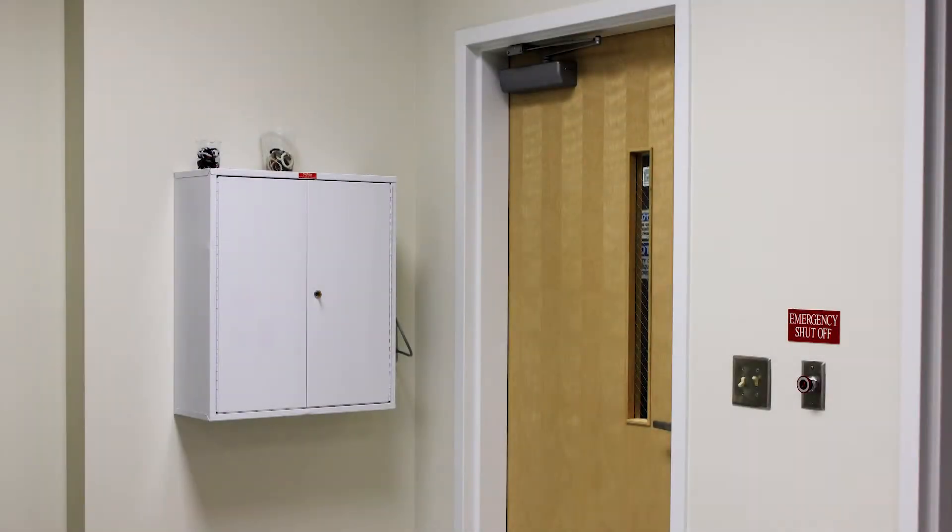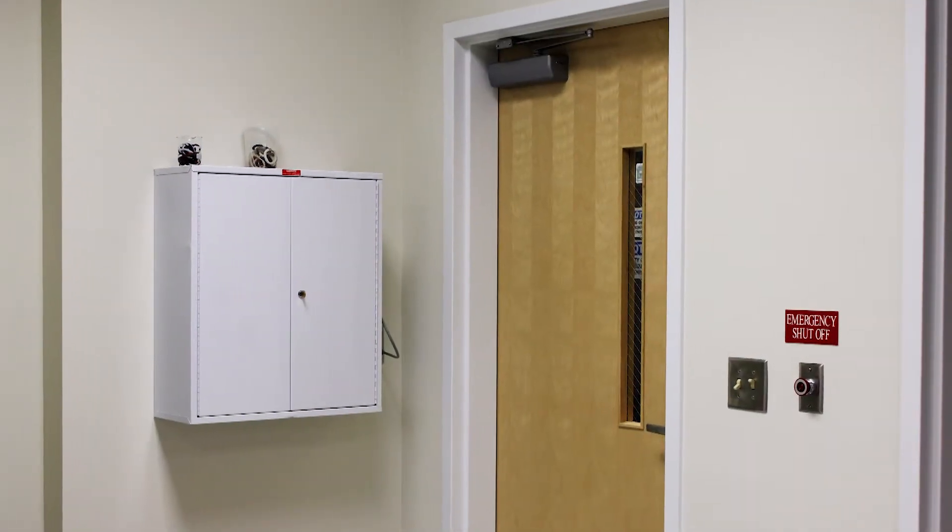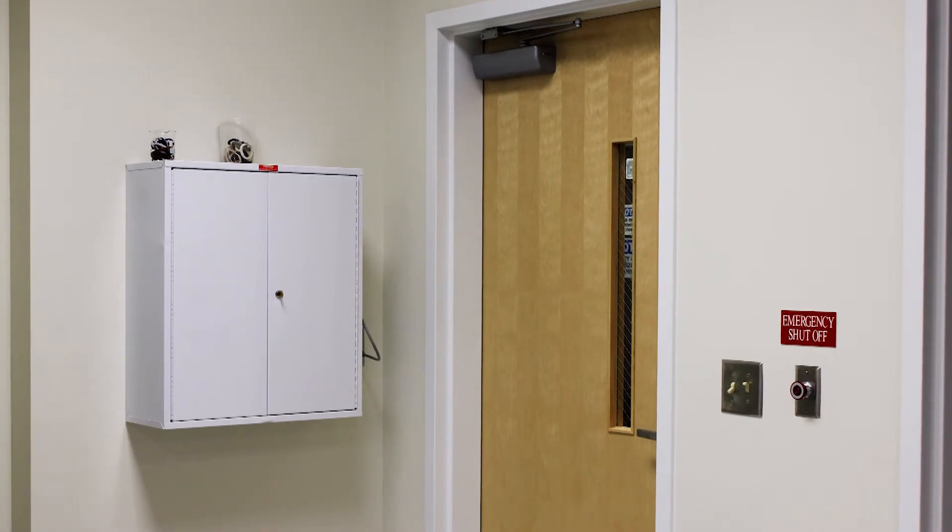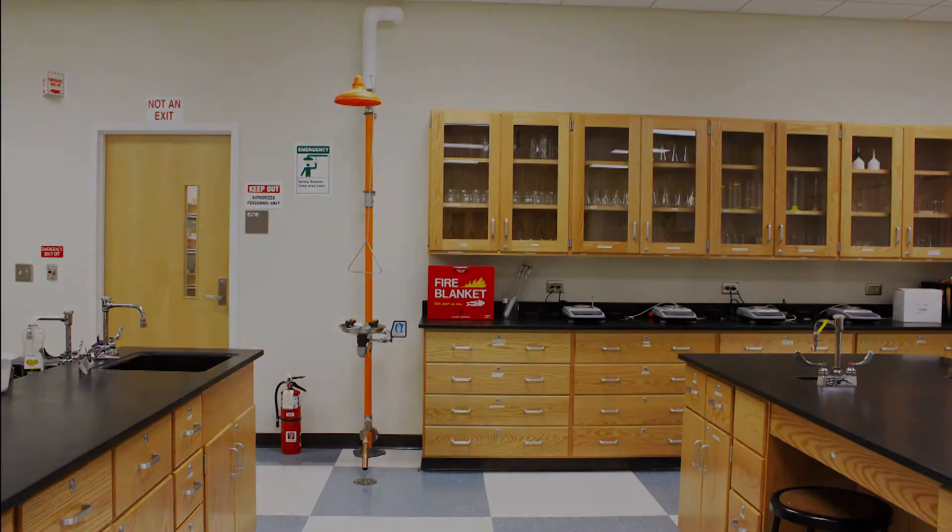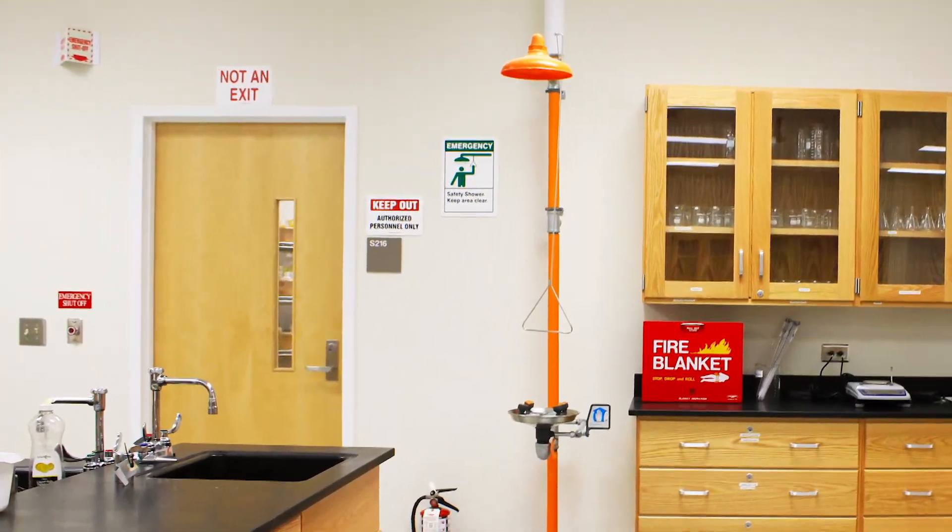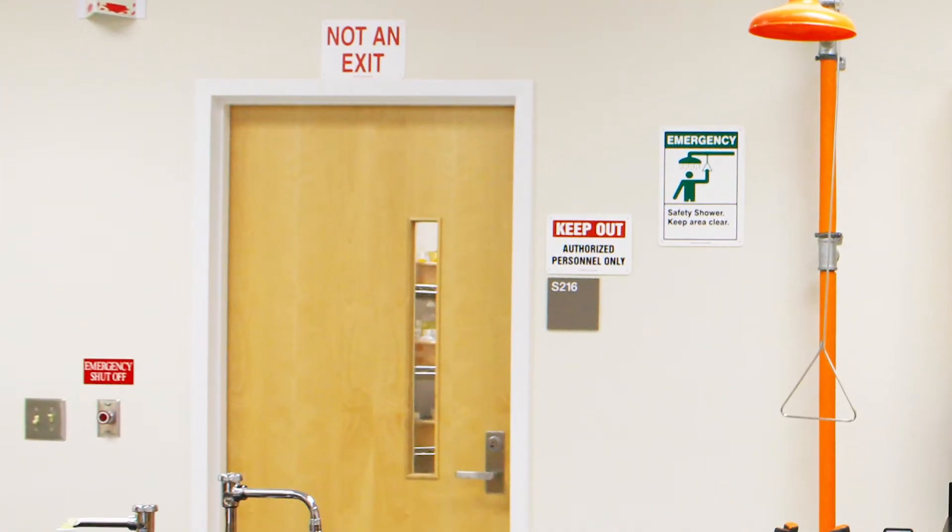If the primary exit is blocked, you would proceed through the secondary exit door, which is the door you entered from, and follow the instructions of your instructor to safely exit the building. Note that this door is the entrance to a prep room and is not an emergency exit. In all emergency situations, you should remain calm and listen for instructions from your instructor.